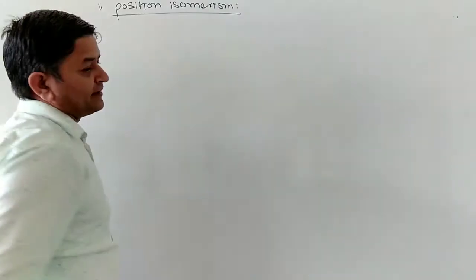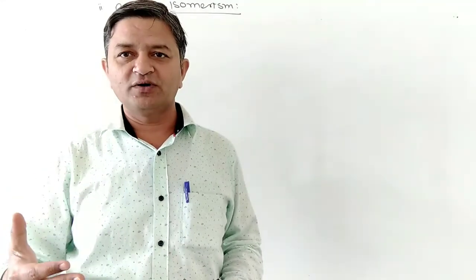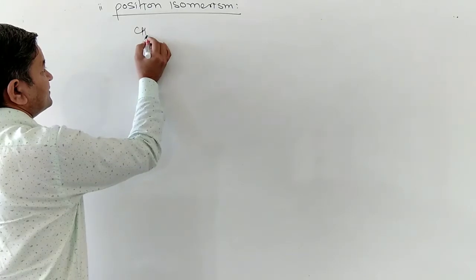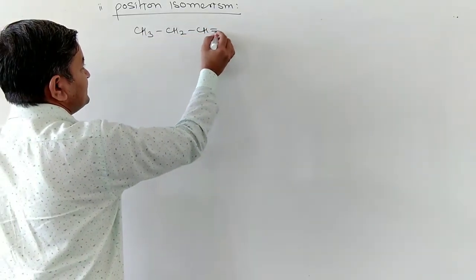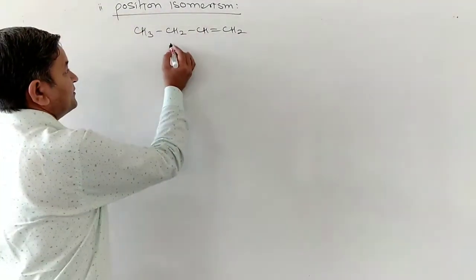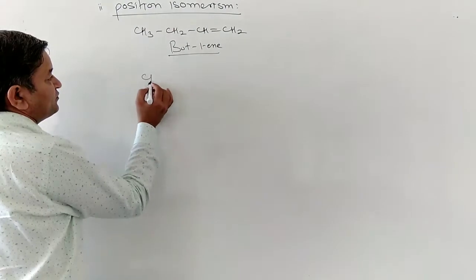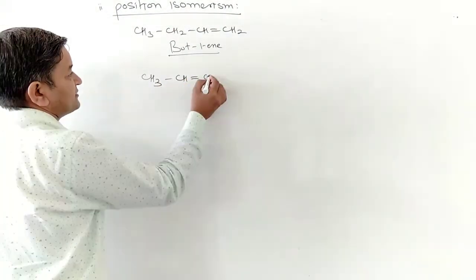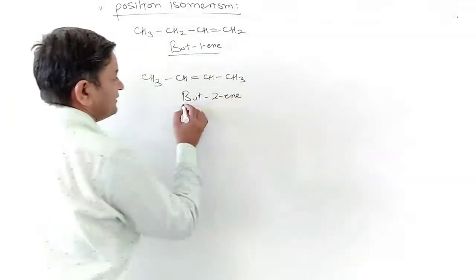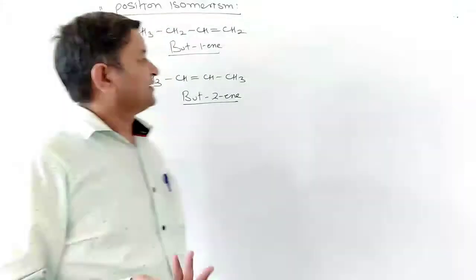Position isomerism: the compounds whose molecular formula is the same, but there is a change in the position of the double bond or the triple bond. That change in the position of the multiple bond is called position isomerism. For example, CH3-CH2-CH=CH2, which is called but-1-ene.